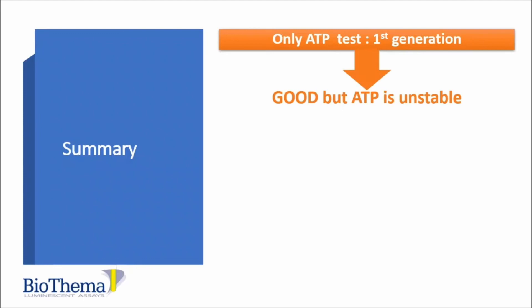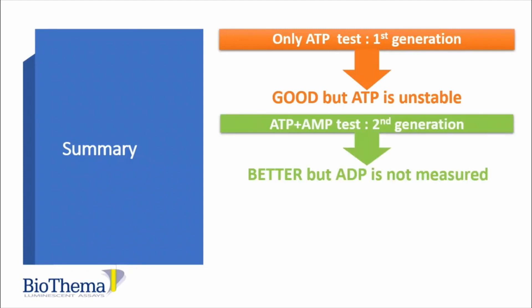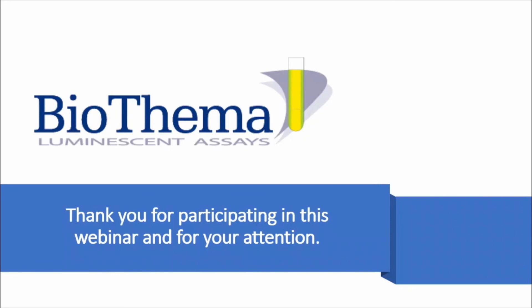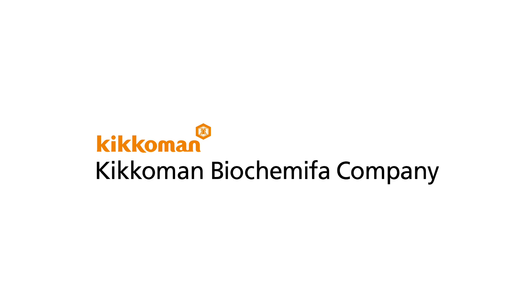In summary: the first-generation ATP test is good, but ATP is unstable. The second-generation ATP plus AMP test is better, but ADP is not measured. The third-generation A3 test is best, as ATP plus ADP plus AMP is all measured. Thank you very much for participating in this webinar and for your attention.